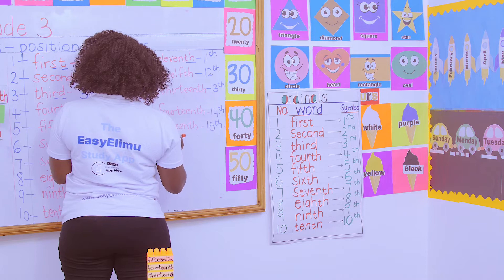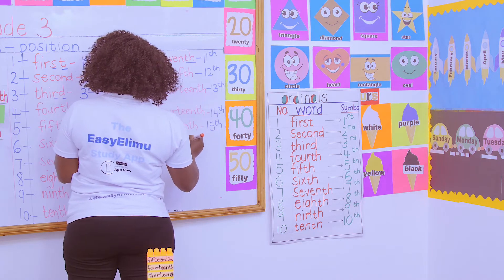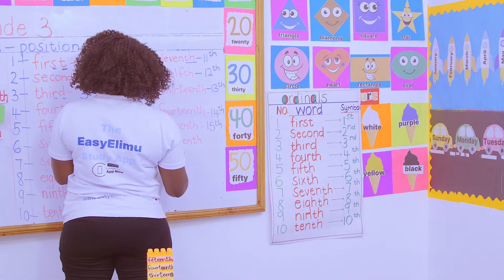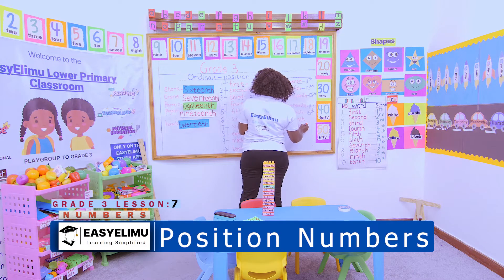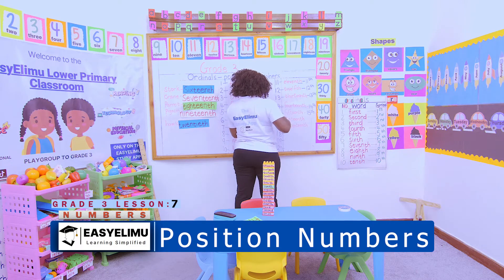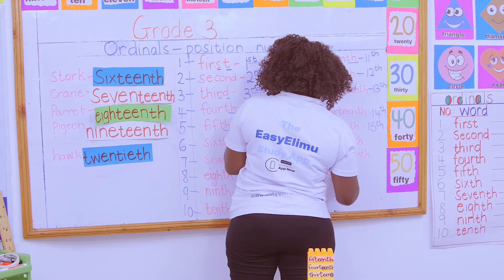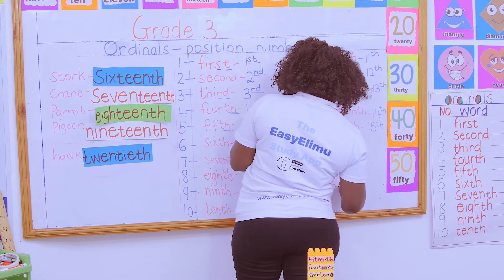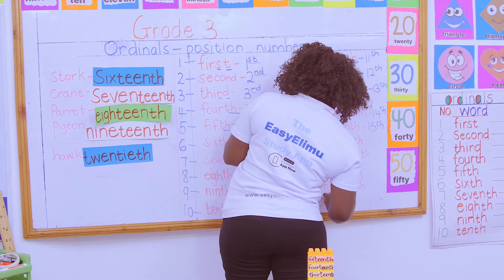So let's see how we write this. We said 16th — it is the number 16, then you add TH to form 16th. Then 17 — the number 17 with a TH to form 17th. Then 18 with a TH to form 18th. Then 19 with a TH to form 19th. And 20th.